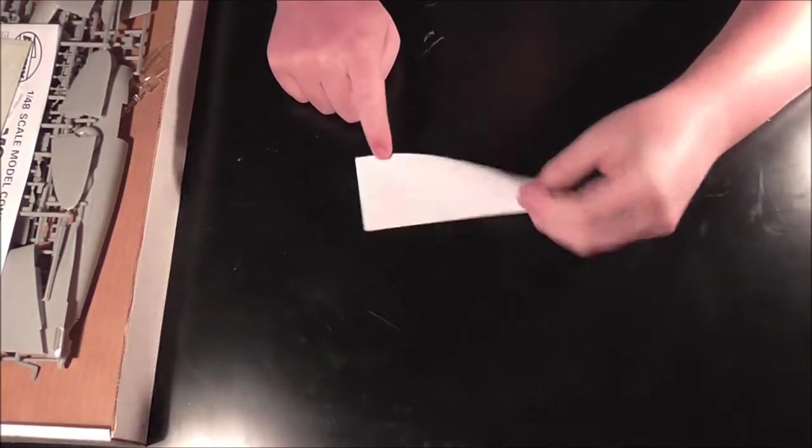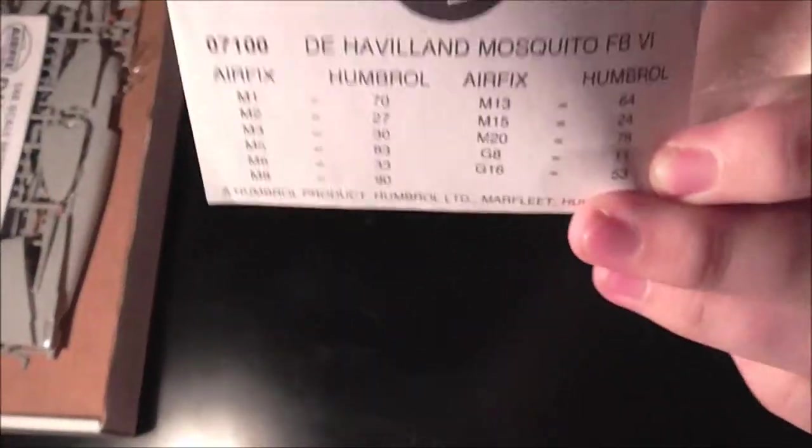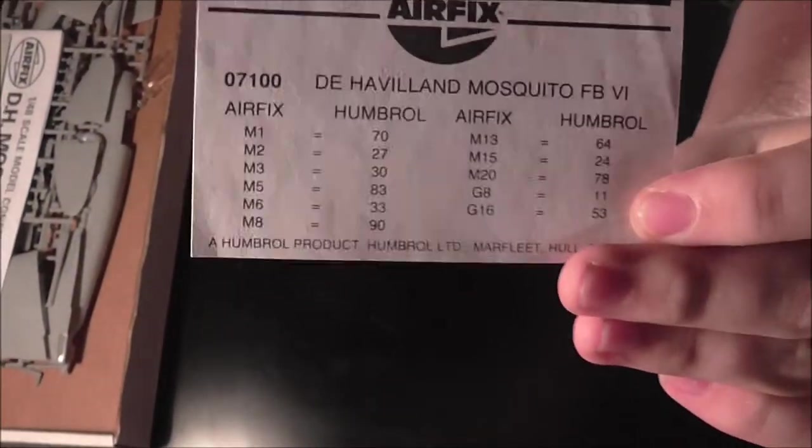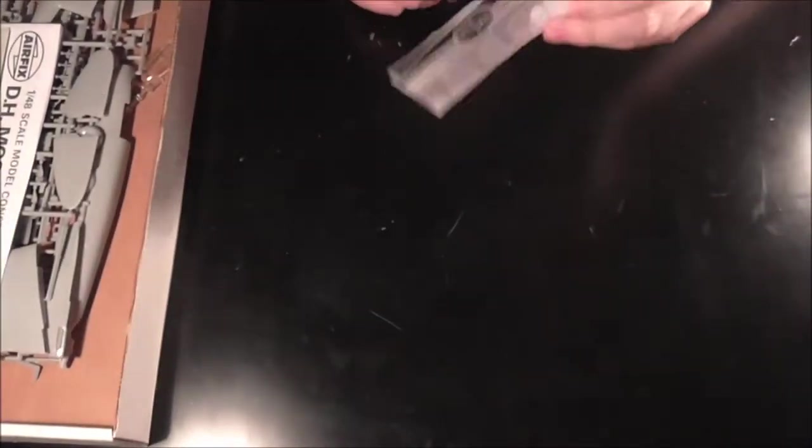So, we have just the general warnings and stuff. Nothing to worry about that. And, Humbrol and Airfix paint numbers. It's nice that it included both of them.